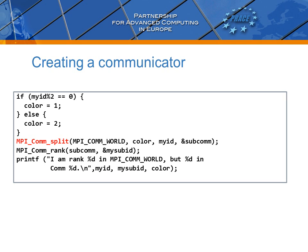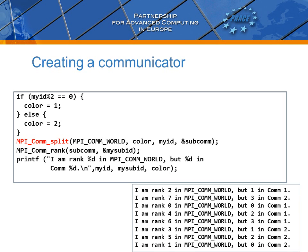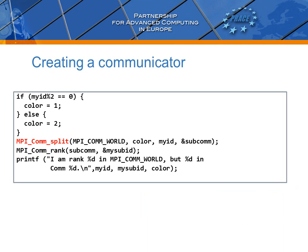Let us finally demonstrate this by checking and printing out the rank numbers in the new communicator. As you can see, defining your own communicators is very straightforward and may prove to be useful when developing your MPI application. Thank you.